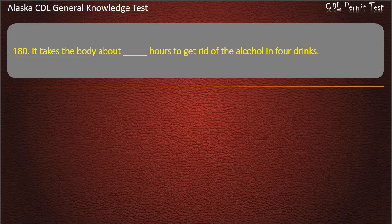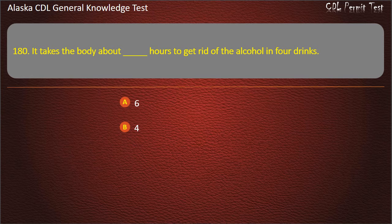Question 180. It takes the body about how many hours to get rid of the alcohol in 4 drinks? 6, 4, or 2 hours. Answer: 4 hours.